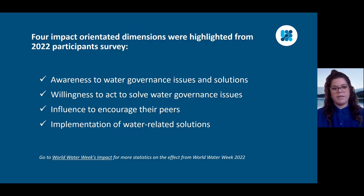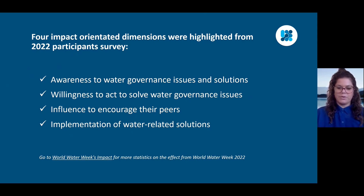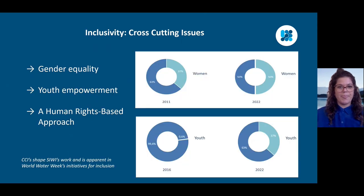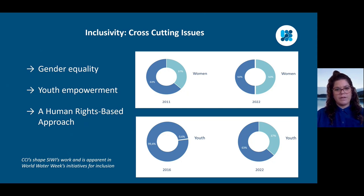There were four impact-oriented dimensions highlighted from the 2022 participant survey. The four outcomes were awareness and willingness to act to solve water governance issues, influence to encourage others and the implementation of water-related solutions. If you would like to see more statistics, please go to our webpage and you will find more from 2022. In 2022, we also held our first hybrid conference, a new format which opened World Water Week up to a more inclusive audience. The week actively promotes the inclusion of youth, women, indigenous and marginalized people.